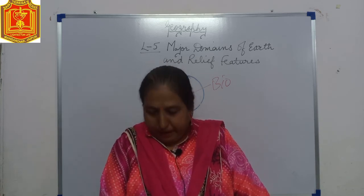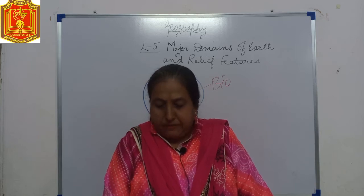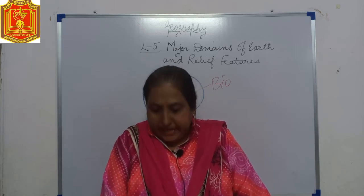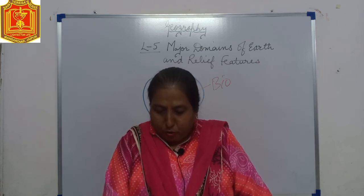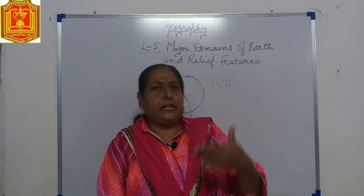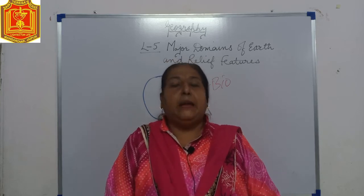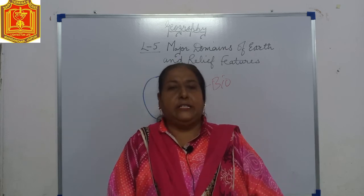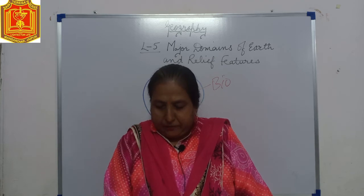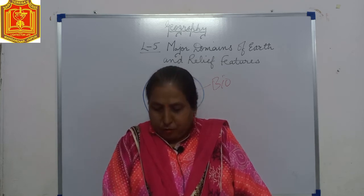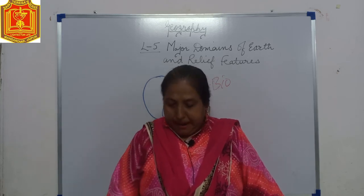It is because of this narrow zone called the biosphere that our earth is regarded as unique in the whole universe. This zone supports several varieties of organisms, both plants and animals. Some of them are so minute that they can be viewed only with the help of a microscope, while others are quite big and huge. Some organisms live under the surface of the earth, others live deep underwater, and still others roam on the earth or in the air.